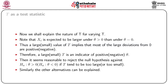Now we shall explain the nature of T for varying theta. If theta is greater than 0, then the xi's are expected to be larger, and most of the zi's are expected to be 1, yielding a large T. Therefore, a large T is an indicator of a positive theta. It is reasonable to reject the null hypothesis against theta greater than 0 if T tends to be too large. Similarly, the other alternatives can be explained.